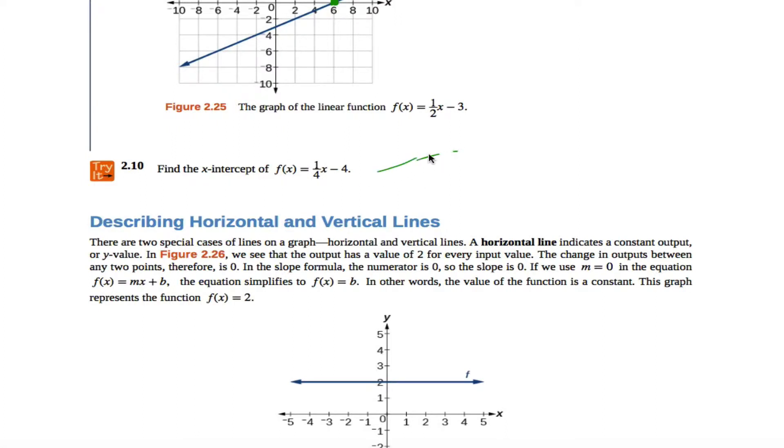So all I have to do is solve this equation right here. All I have to do is solve for what x will make the y equal to 0. And if I'm solving this equation right here, I want to isolate the x, so I would add 4 to both sides of the equation. Then I would multiply both sides of the equation by 4 and get x equals 16.